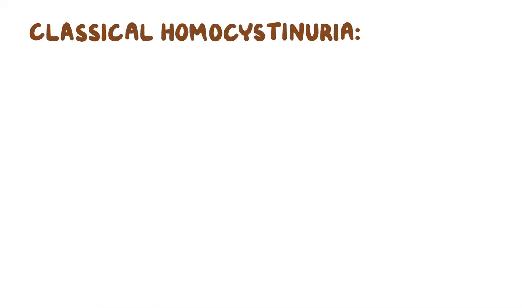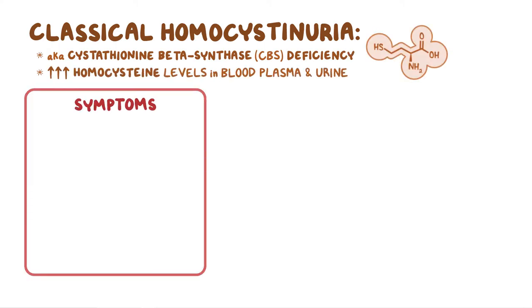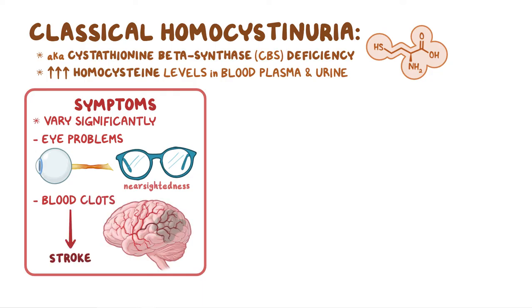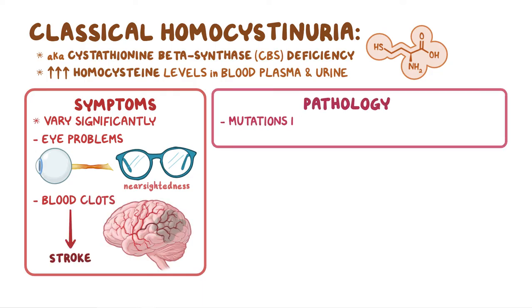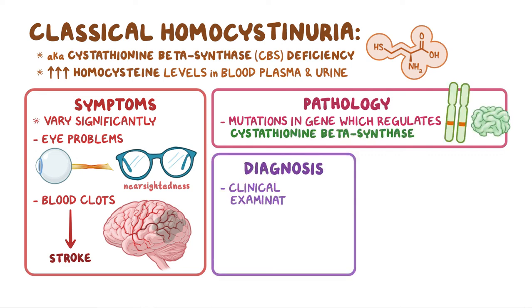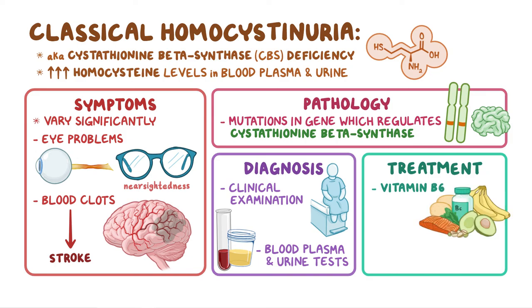As a quick recap, classical homocystinuria, also called cystathionine beta-synthase deficiency, causes increased homocysteine levels in blood plasma and urine. Symptoms vary significantly, and often cause eye problems such as nearsightedness, and in severe forms can cause blood clots leading to stroke. CBS is caused by mutations in a gene which regulates cystathionine beta-synthase. Diagnosis includes a clinical examination followed by specific blood plasma and urine tests. The primary treatment is vitamin B6, but other treatments such as betaine and a low-protein diet might also be needed.